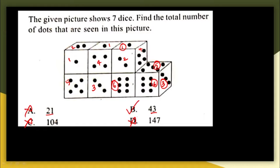Just by looking at the options you can eliminate options C, D, and A. When you start adding the dots you find the total is definitely greater than 21. The correct answer is option B: 43.